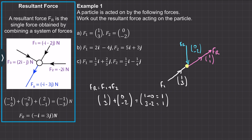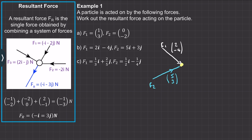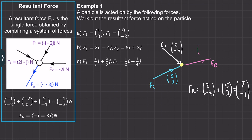Now try working out the direction of the resultant force when F1 and F2 are applied to a single particle — pause the video and we'll go through the worked solution. Welcome back. In question b, we have F1 = 2i − 4j and F2 = 5i + 3j. Adding them together: FR = (2+5)i + (−4+3)j = 7i − j, so FR = (7, −1).